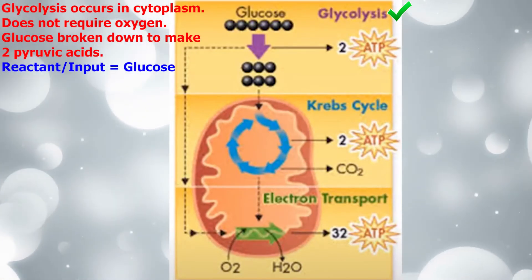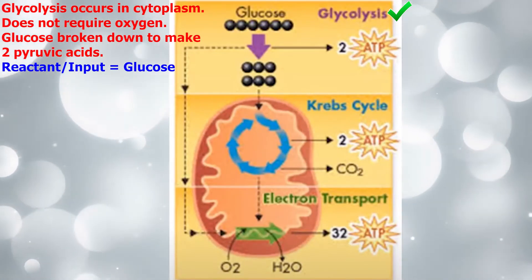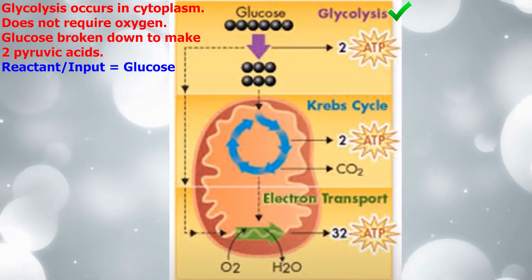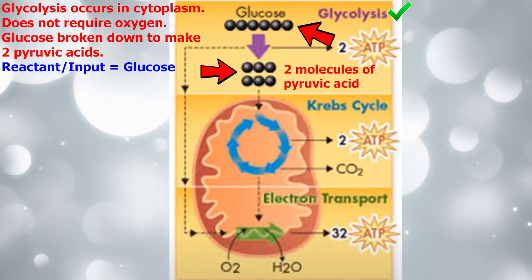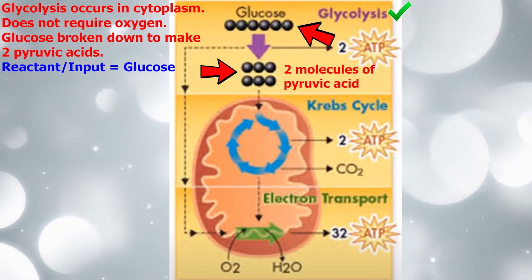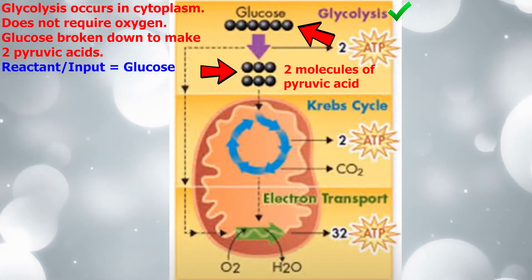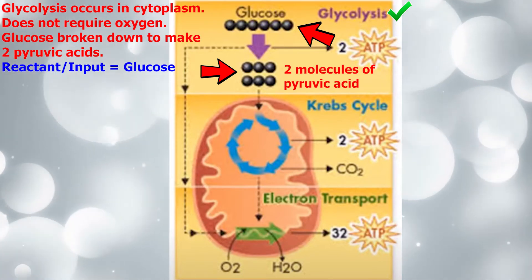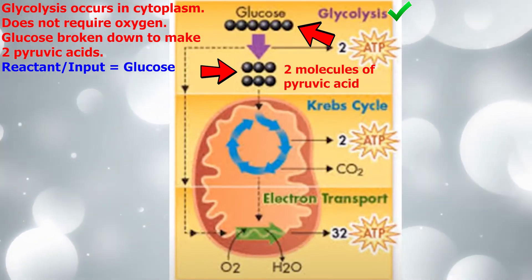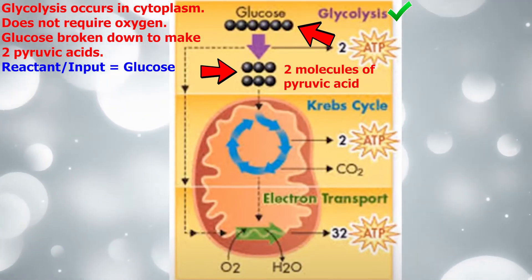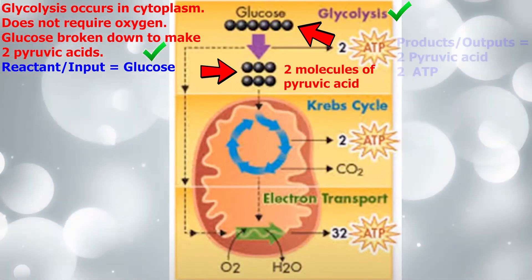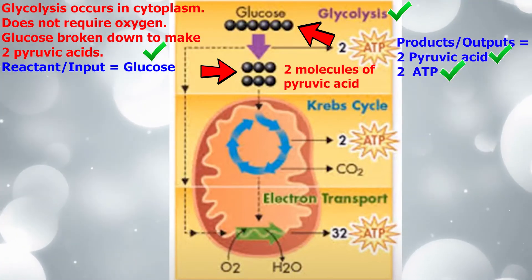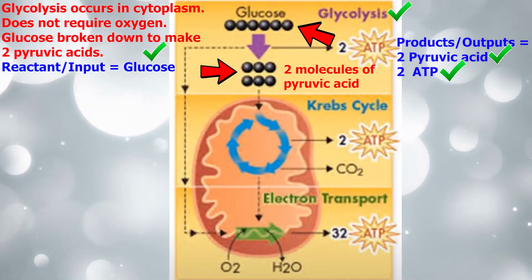Now let's dive into the first stage of cellular respiration: glycolysis. Glycolysis occurs in the cytoplasm of cells and does not require oxygen to start. In glycolysis, enzymes break apart one molecule of glucose to make two molecules of pyruvic acid. Glycolysis also makes four ATP molecules, but two of these molecules are used to start glycolysis. So the one reactant of glycolysis is glucose, and the two products of glycolysis are two pyruvic acid molecules and two ATP molecules that fuel the Krebs cycle.